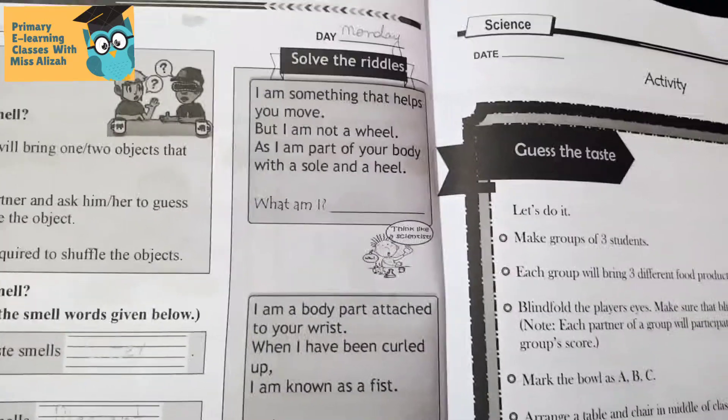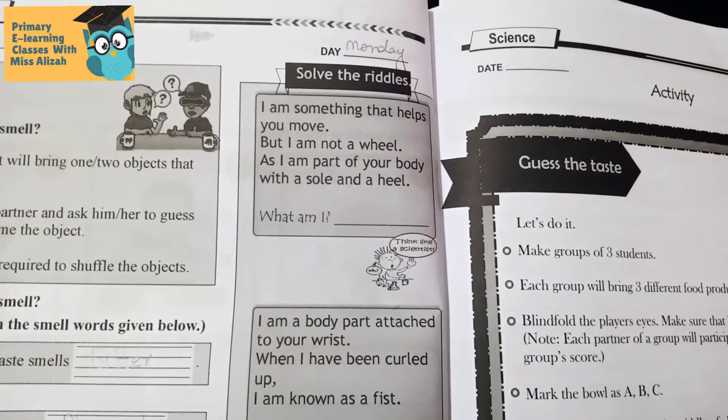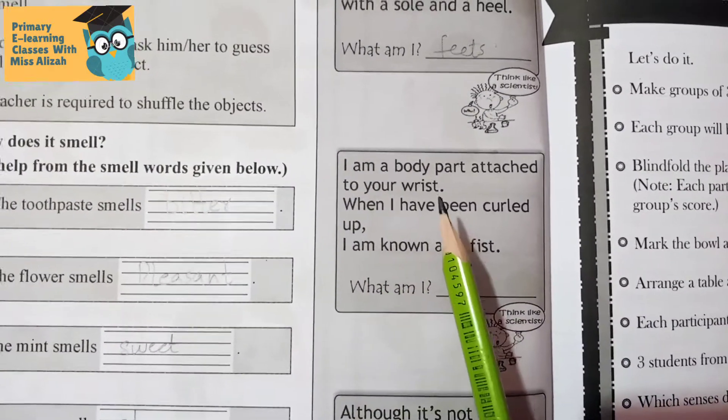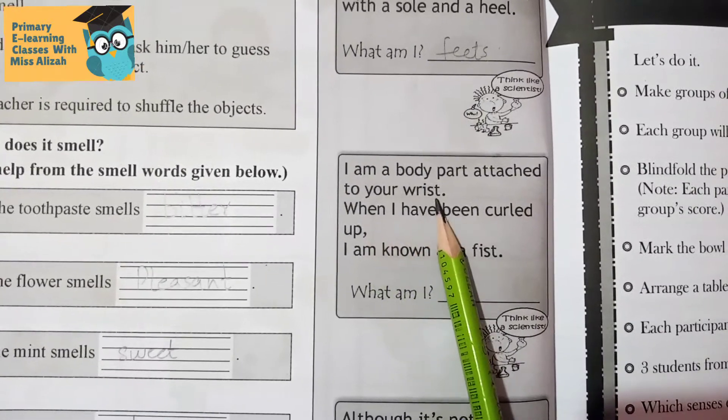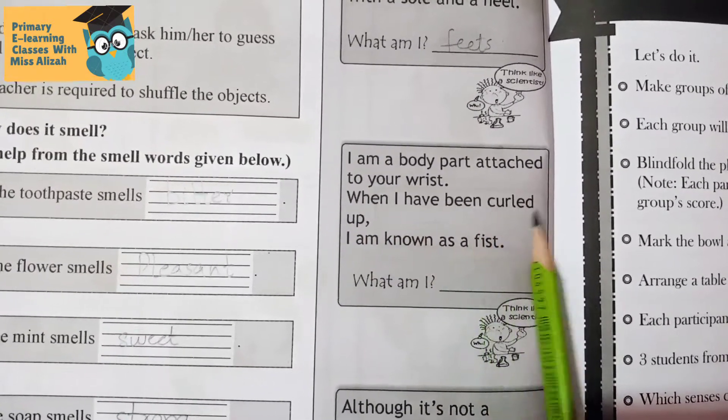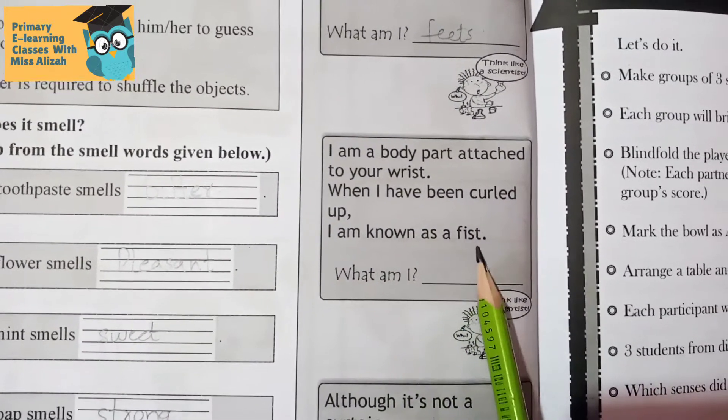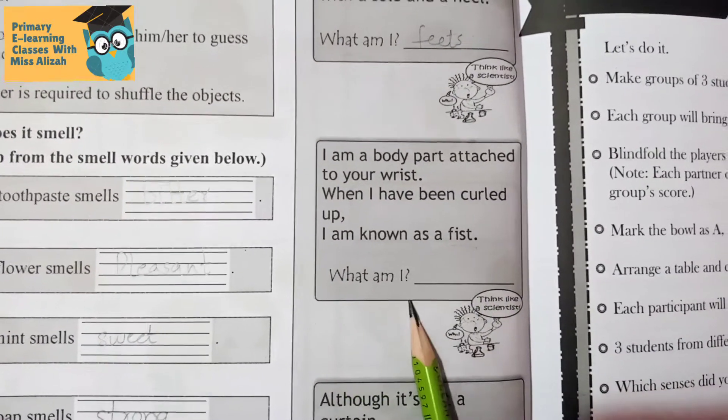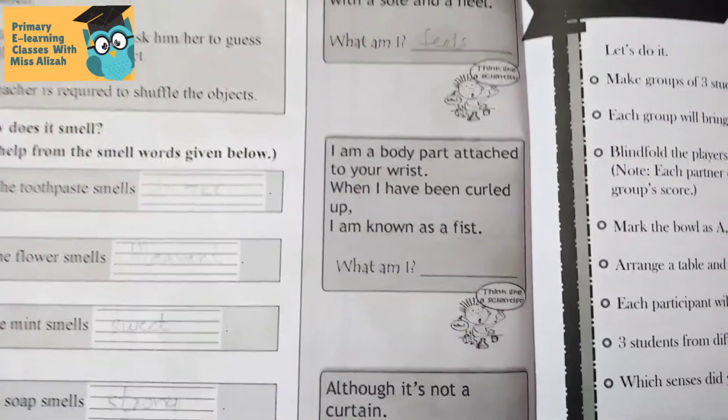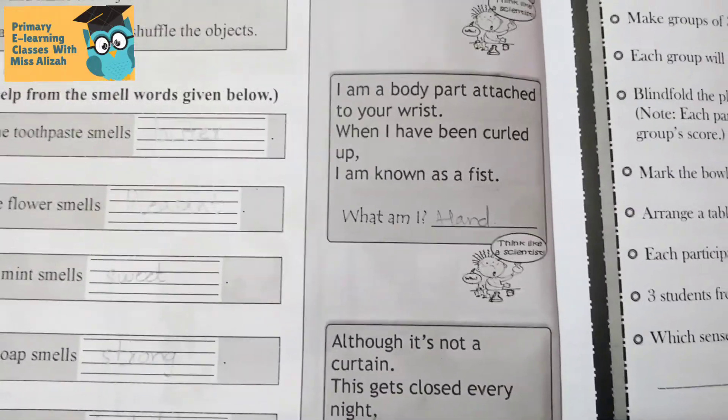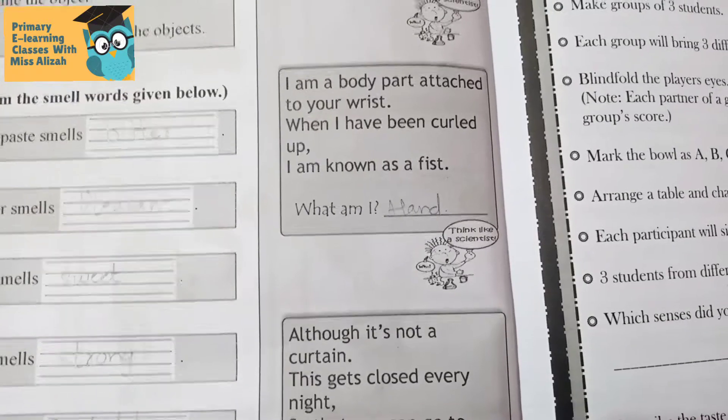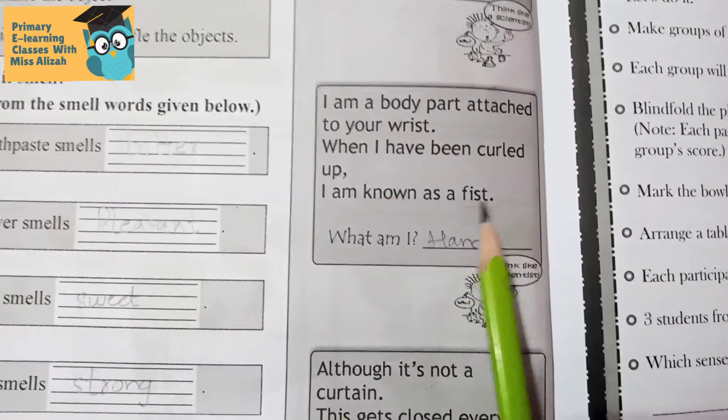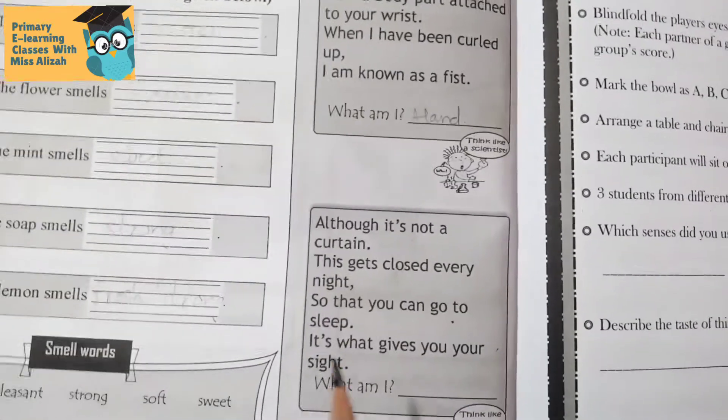I'm a body part attached to your wrist. When I have been curled up, I am known as a fist. So what am I? I am your hand, right? When we curl our hands to punch, our fist.